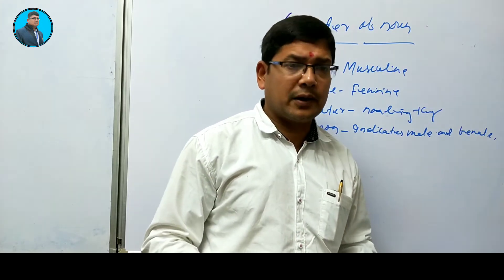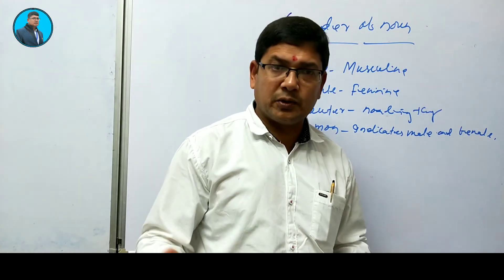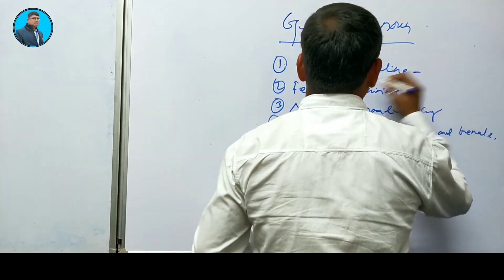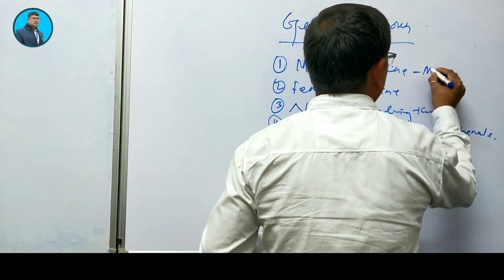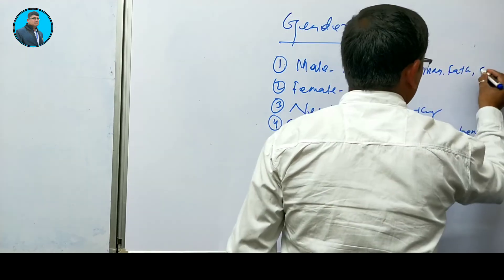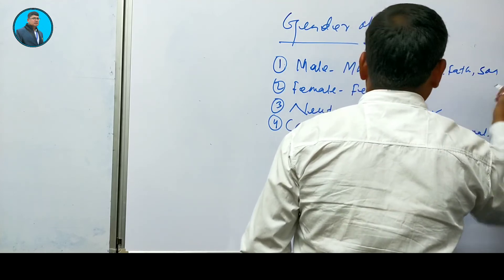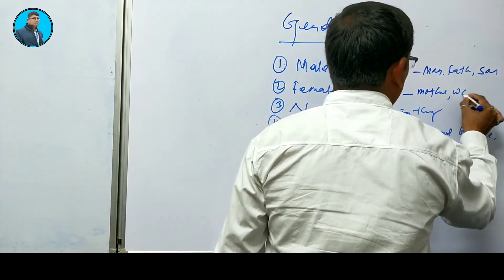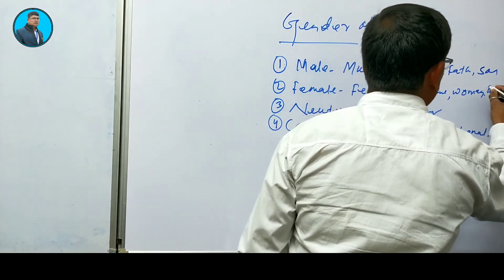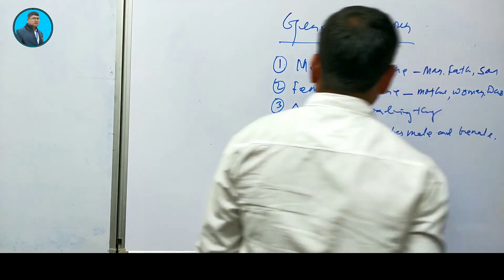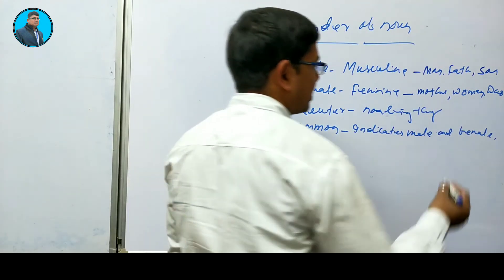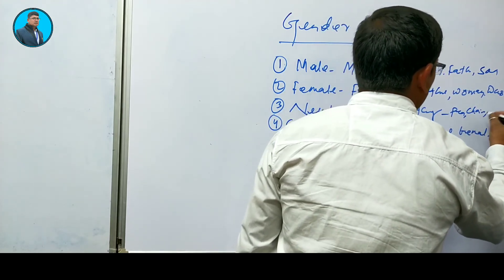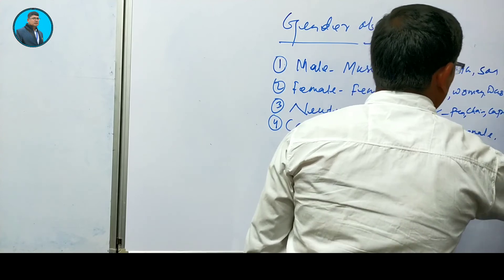Neuter gender refers to non-living things. For example, a marker is your neuter gender, a copy is your neuter gender. Let me write: man, father, son, etc. for male; mother, woman, daughter, etc. for female; and for neuter — non-living things like pen, chair, copy.